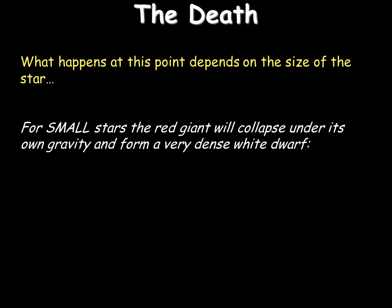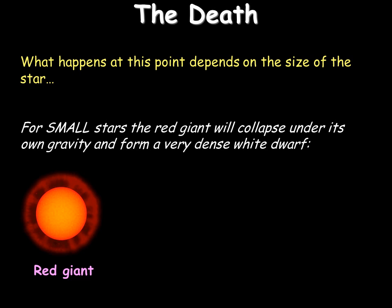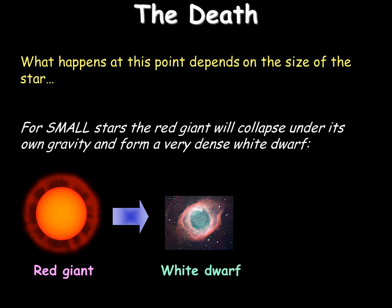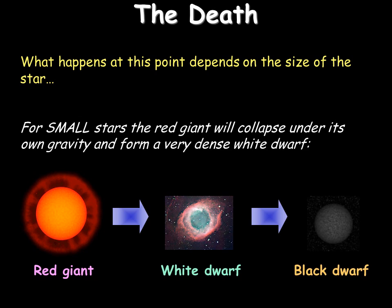For very small stars, the red giant will collapse under its own gravity, being pulled inwards, become much smaller and turn into a white dwarf, and then eventually into a black dwarf as it runs out of energy. That's what happens with small stars, and that's what will happen with our Sun in millions of years to come.